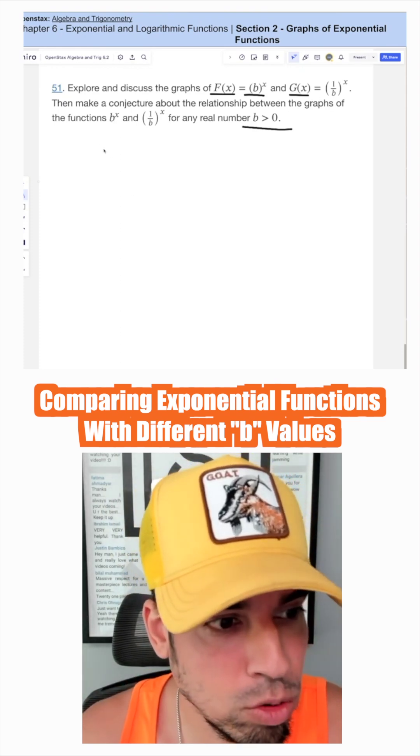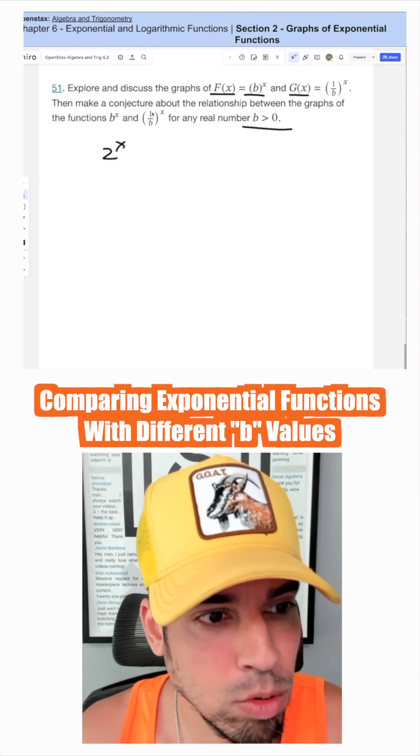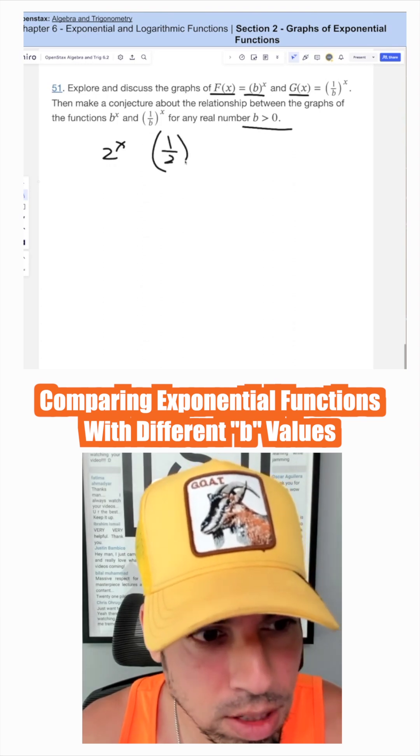Okay, so b is 2, this would be 2 to the x, then this would be 1 over 2, aka 1 half to the x.